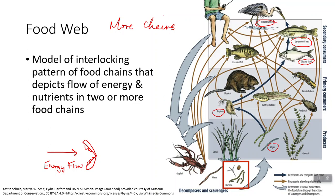The largemouth bass then gets eaten by a great blue heron. We can also trace energy through decomposers — crayfish will end up eating decomposing materials, and then that can transfer to any of these places, including to humans. Humans also catch some of these fish, so you could trace a food chain going from, say, the coontail to the pond snail to the green sunfish to the human.